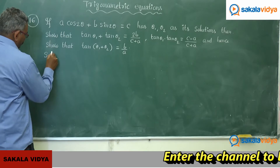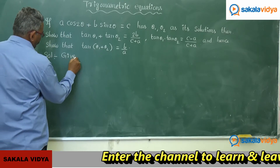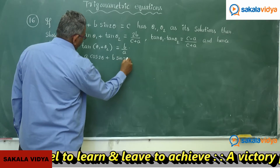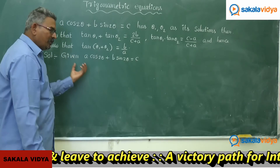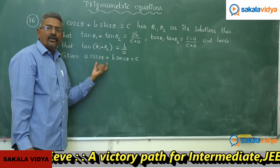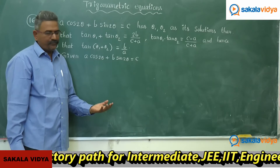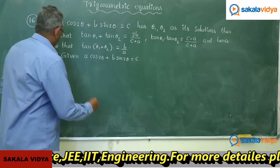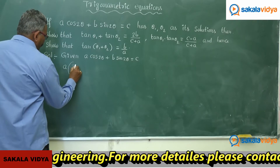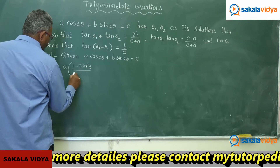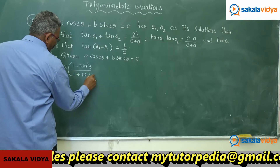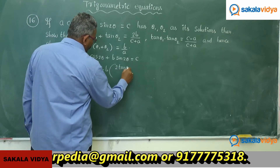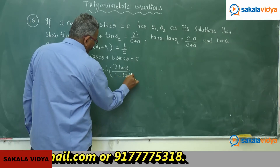Given: a·cos2θ + b·sin2θ = c. In multiples and sub-multiple angles we have studied that cos2θ = (1 − tan²θ)/(1 + tan²θ), whereas sin2θ = 2tanθ/(1 + tan²θ). Let us substitute those values now. So this becomes: a·(1 − tan²θ)/(1 + tan²θ) + b·(2tanθ)/(1 + tan²θ) = c.